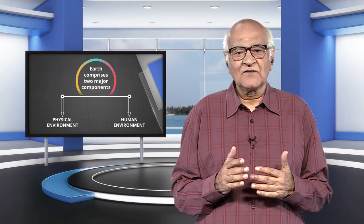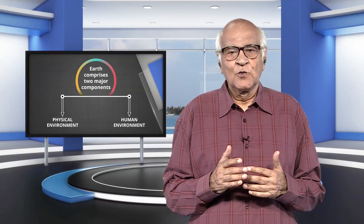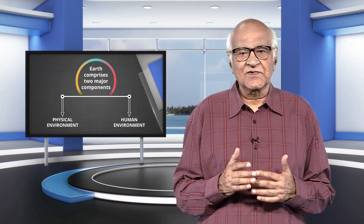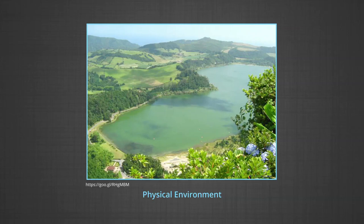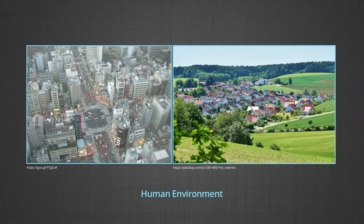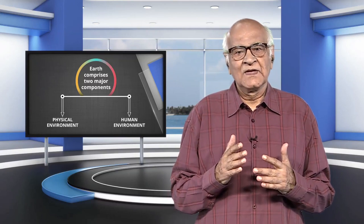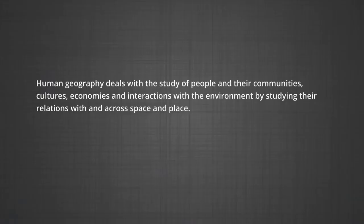If we want to make a list of physical and human components of our surroundings, we can easily make it. Your list may include mountains, rivers, plains, soils, animals, trees, birds, roads, schools, parks, hospitals, etc. Physical geography studies physical environment and human geography studies the relationship between the physical environment and the human realm — that is the spatial distribution of human phenomena and how they have come about, and the social and economic differences between different parts of the world. Human geography deals with the study of people and their communities, cultures, economies and interactions with the environment by studying their relation with and across space and place.